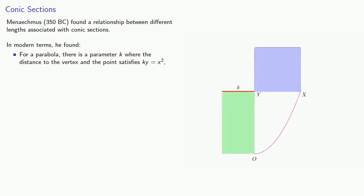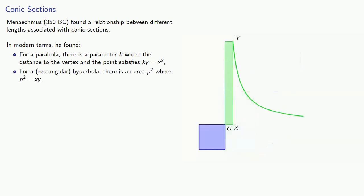And for what we call a rectangular hyperbola, there is an area p squared where p squared is the rectangle on x and y. And again, no matter how you move along the hyperbola, that rectangle and that square will always have equal area.